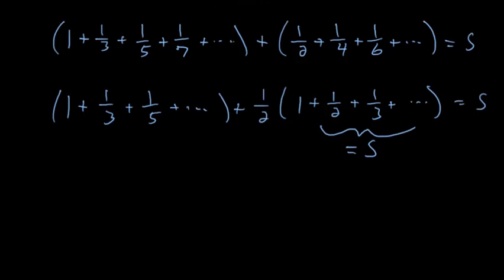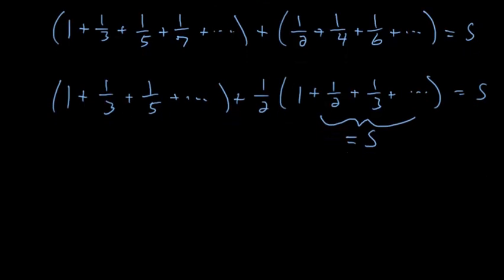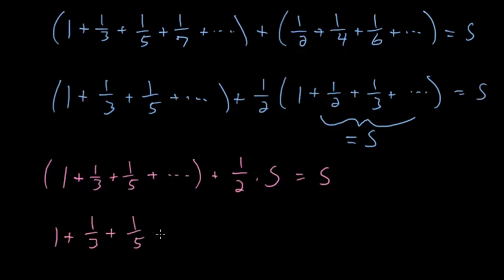So let's rewrite this equation as the sum of the odd terms since that remains unchanged plus 1 half times s and this is equal to s. So we can subtract 1 half s from each side so that the sum of these odd terms adds up to 1 half s.